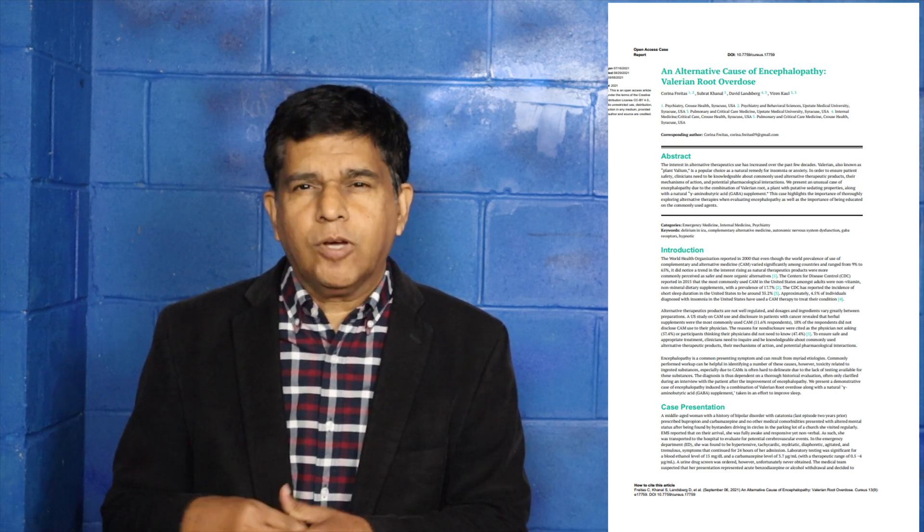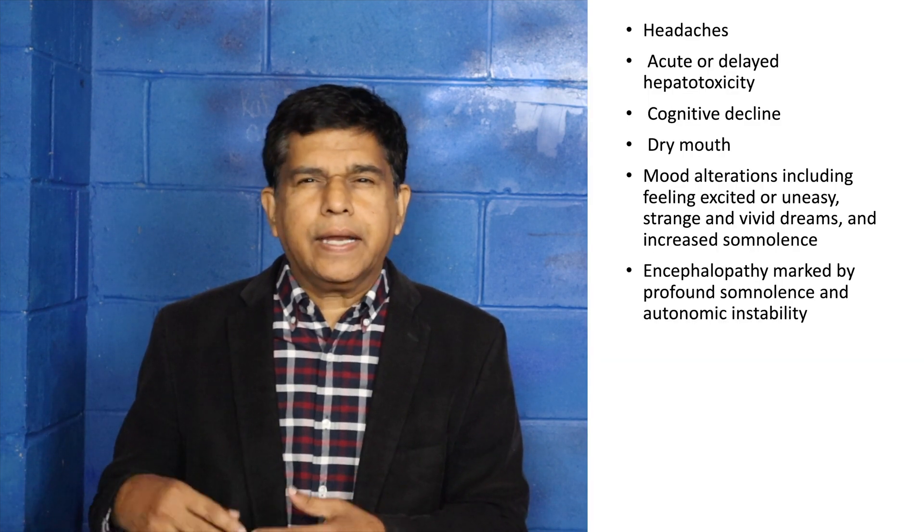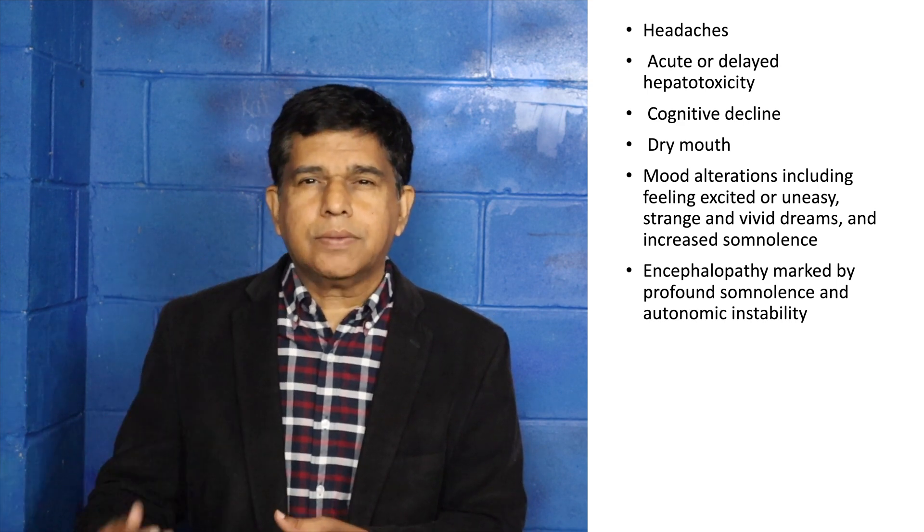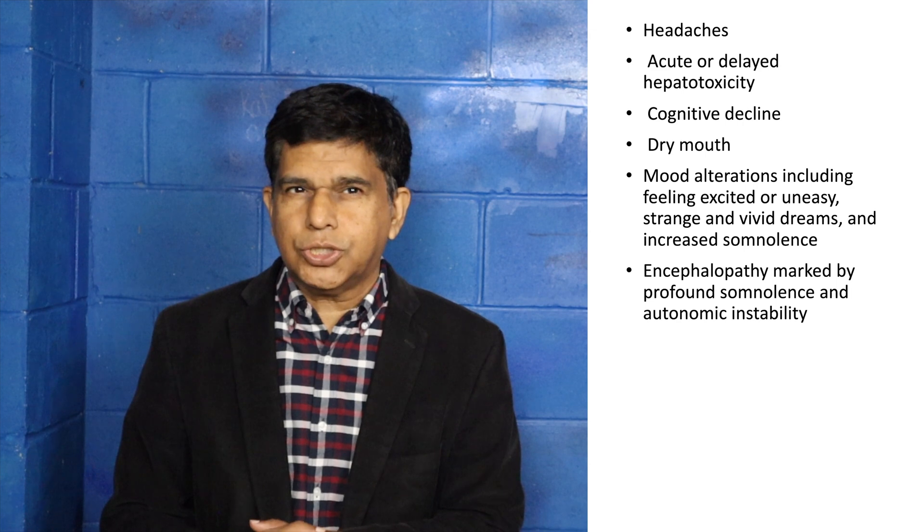Now we're going to look at case reports, which report unusual or uncommon complications in the scientific literature. In the first case report, a middle-aged female came in after overdosing on valerian root. This resulted in mental status changes, encephalopathy, headache, and a number of CNS symptoms that developed from the toxicity.